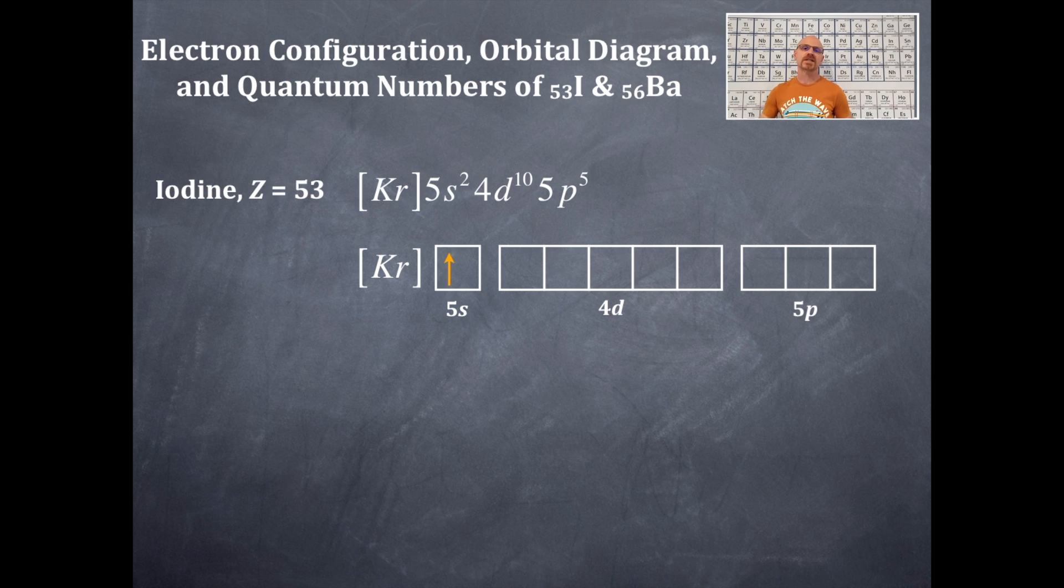We're going to place these electrons in their order as they appear. That's up, down, then up, up, up, up, up, up. I've half-filled them, all parallel spins, and then I'm going to backfill them with the opposite anti-parallel spin.